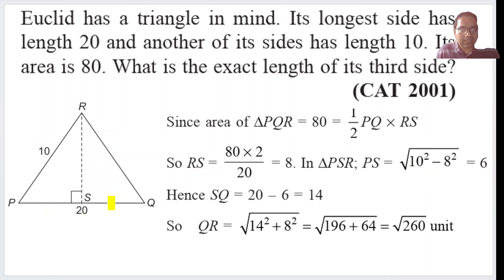If PS is 6, SQ is equal to 20 minus 6. This entire thing is 20. So this is 14. Now we know this is 14, and this is 8, RS is 8. So we know RQ because this is again a right angle triangle.